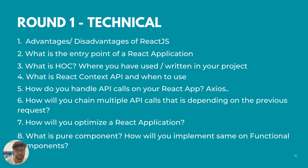Right after the API calls question, the next question was: suppose you have to chain multiple API calls and the current API call's request is dependent on the previous API call's response — how will you handle it? You can answer based on what you've done in your projects. The seventh question was how do you optimize a React application at a code level for performance. I mentioned mostly lazy loading and using pure components.